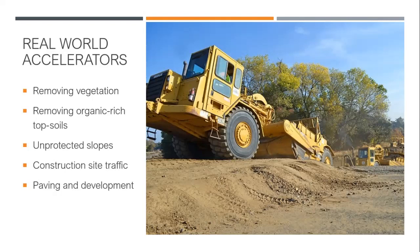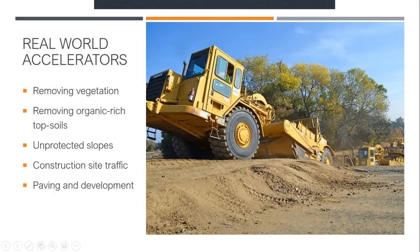If you remove that topsoil from the site and go down to the next horizon — say the C horizon — where there's no organic material, that's an accelerator. You've sped up erosion by exposing soils with no organic material. My colleague Craig Kolaji is giving several workshops this week on compost and its benefits — one of the big benefits is to prevent that accelerator from happening. Unprotected slopes are also an accelerator, and construction site activity — movement, disturbing soil — those are accelerators. And the last one a lot of people don't think about: the development itself, paving and building. You might reduce erosion on that site, but you may actually be accelerating erosion off-site in the watershed.